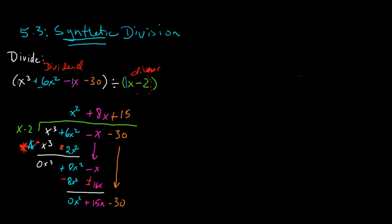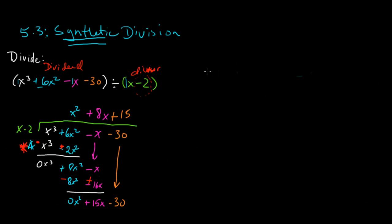So since we've already built in the idea of synthetic division to already build in that adding the opposite, we're going to go ahead and take the constant in the divisor, which is 2, and we're going to put it on a division line.